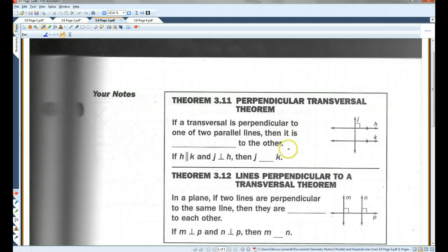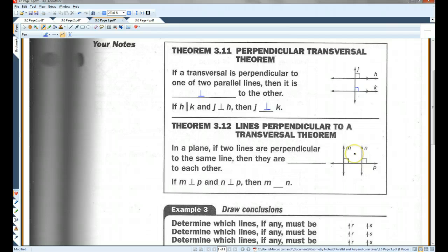Theorem 3.11. If a transversal is perpendicular to one of two parallel lines, then it is perpendicular to the other. So if H and K are parallel and J is perpendicular to H, then J is also perpendicular to K. Which makes sense because this angle and this angle are corresponding angles. And we already know that corresponding angles have to be congruent if the lines are parallel. So if this makes a 90 degree angle, this also has to be a 90 degree angle.